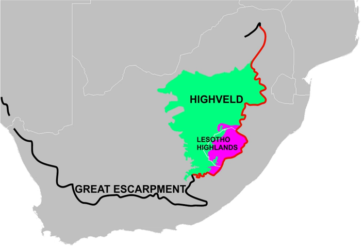Agriculture on the Highveld is generally dominated by extensive grain production and the grazing of beef cattle, with more intensive production of maize, wheat, sorghum, citrus fruits, ground nuts, sunflowers, and vegetables occurring in irrigated areas and farmland closer to urban areas. The peat base of the grassland acts as a natural filter, providing sources of clean water.